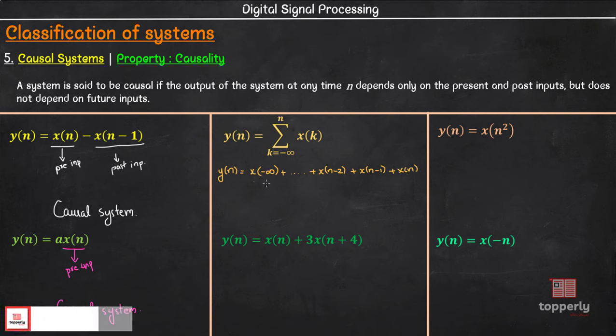Again, the output only depends on the present input and past input values but not on future inputs. So this is also a causal system.